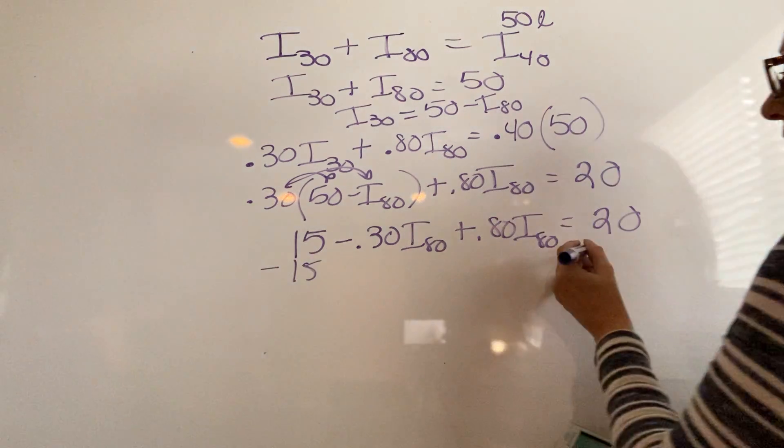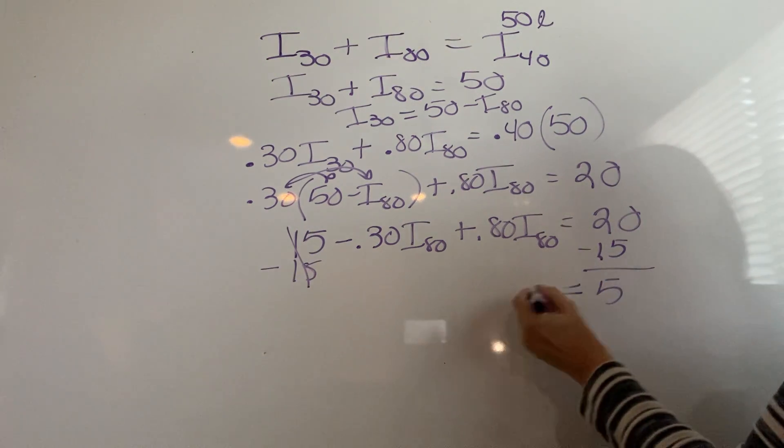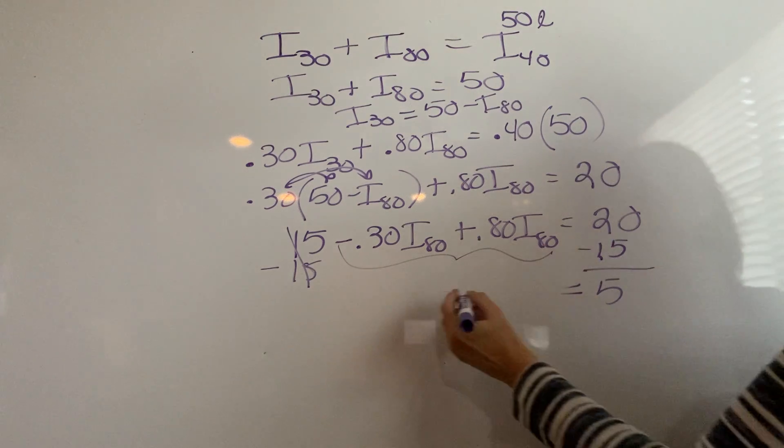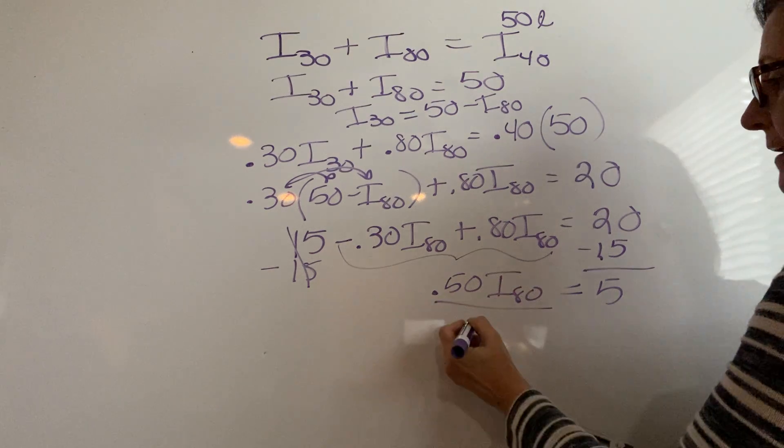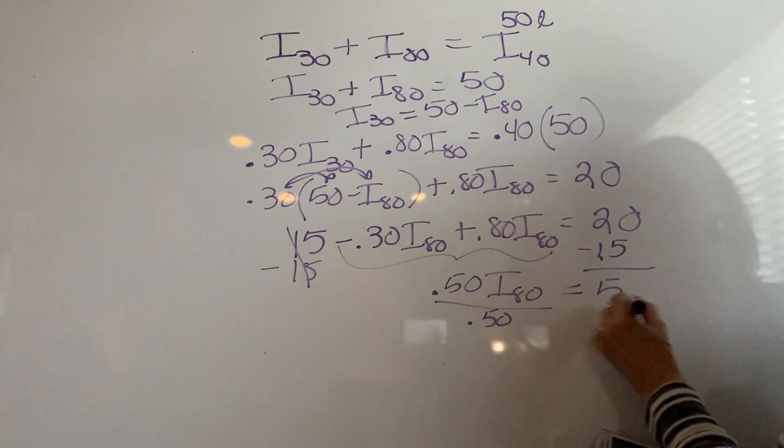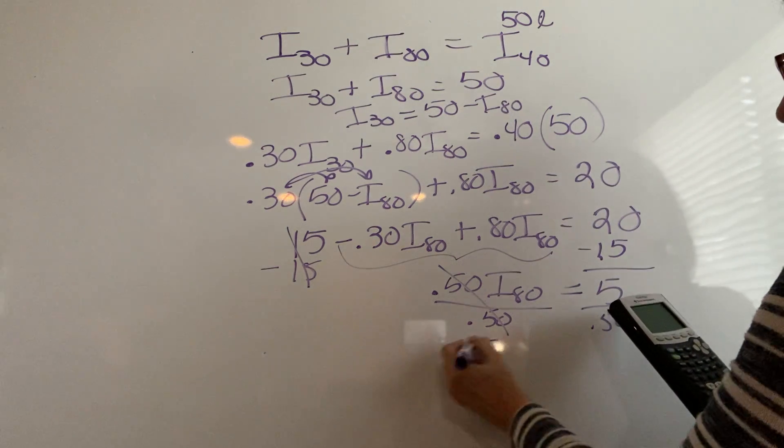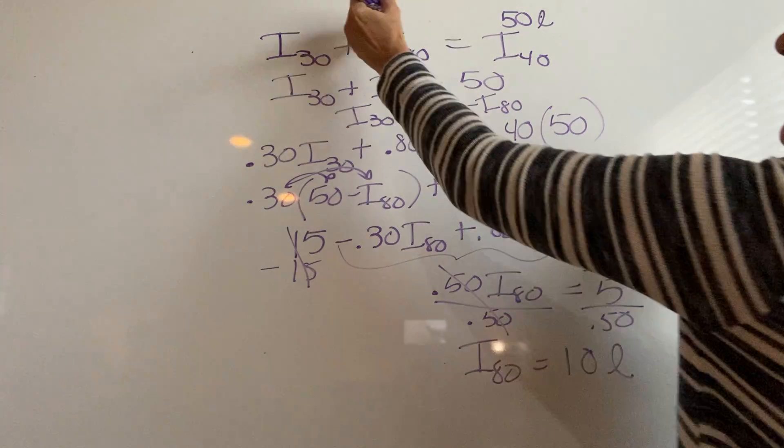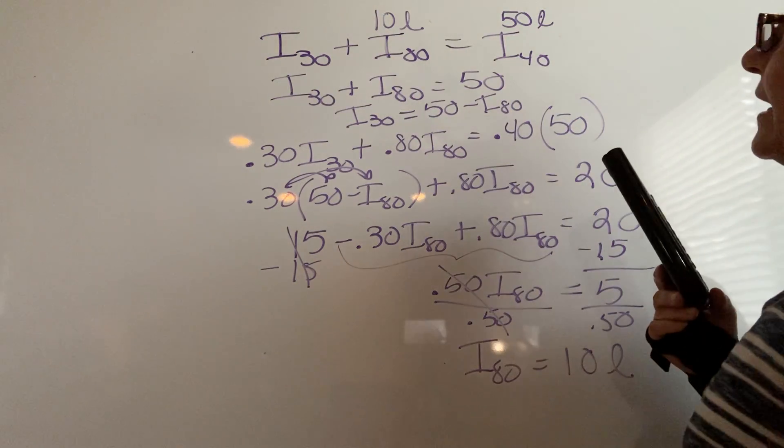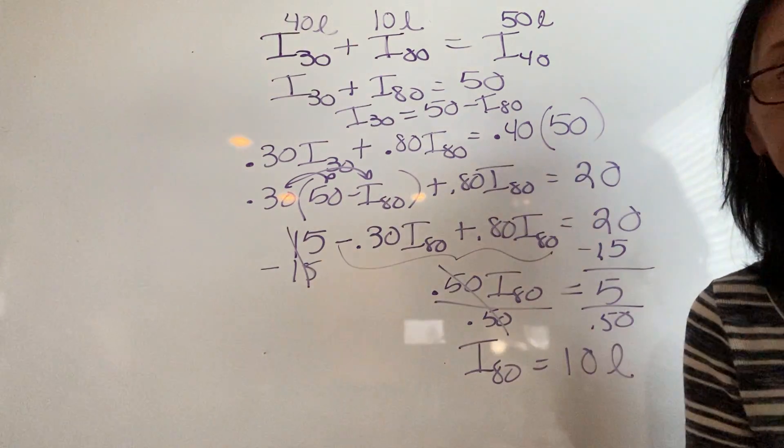I'll subtract the 15 from both sides. So I'm going to put 5 on the right-hand side. We'll combine our like variables. That combined is 0.50 iodine-80. I divide by 0.50 on both sides. 5 divided by 0.5 is 10. Iodine-80 will have 10 liters. If I have 10 liters of iodine-80, they've got to add up to be 50. Then I'm going to have 40 liters of the iodine-30.